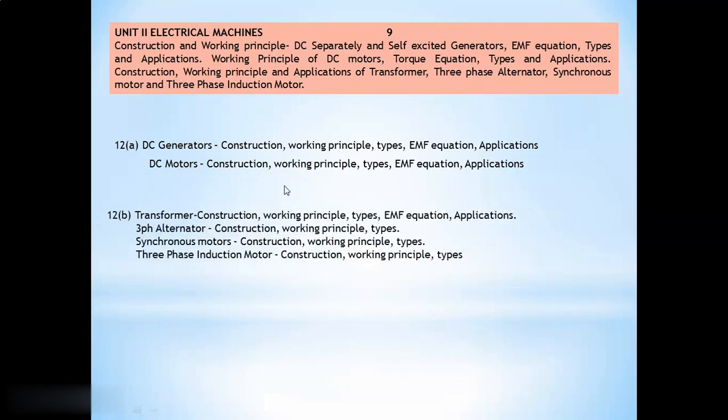If you take 12B, AC machines are second half of second unit. So in 12B, AC machines are expected. They are transformers, three phase alternator, synchronous motors, three phase induction motors. For all these machines, you have to know about its construction, working principle types and applications.